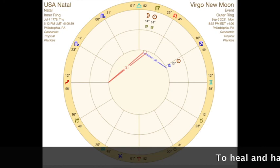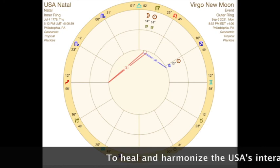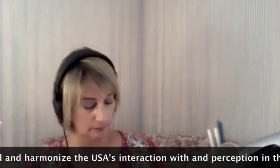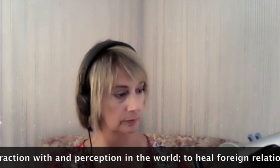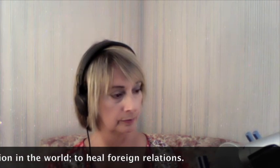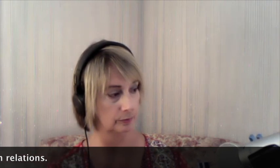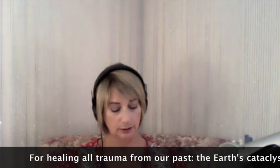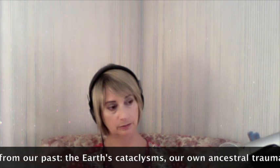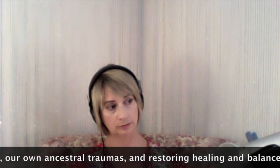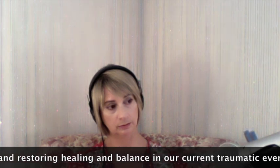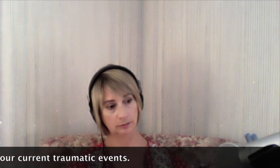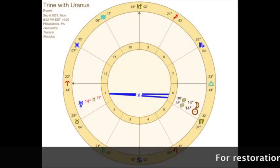This is going to be Sun, New Moon, and Jupiter for the square to the United States Ascendant. This is Sun, New Moon, and Sedna for the opposition. This is Sun, New Moon, and Uranus for the Trine to Uranus.